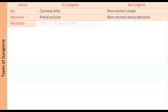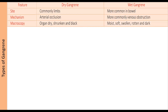Regarding gross features, in dry gangrene the gangrenous limb will be dry, shrunken, black, and mummified. In wet gangrene, the intestine will be moist, soft, swollen, rotten, and dark.